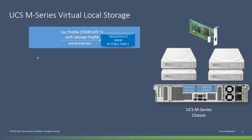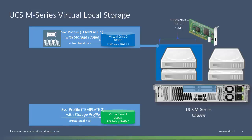Now we see the service profile being associated. At that time the RAID one RAID group is created on the chassis and the specified 100 gigabyte virtual drive is carved out. Here's a second service profile created from a different template with a different storage profile. It still specifies one virtual disk but it's a different size — 200 gigabytes — and uses a different RAID group policy. As this service profile is associated, a different RAID group is created on the chassis for the new virtual drive.